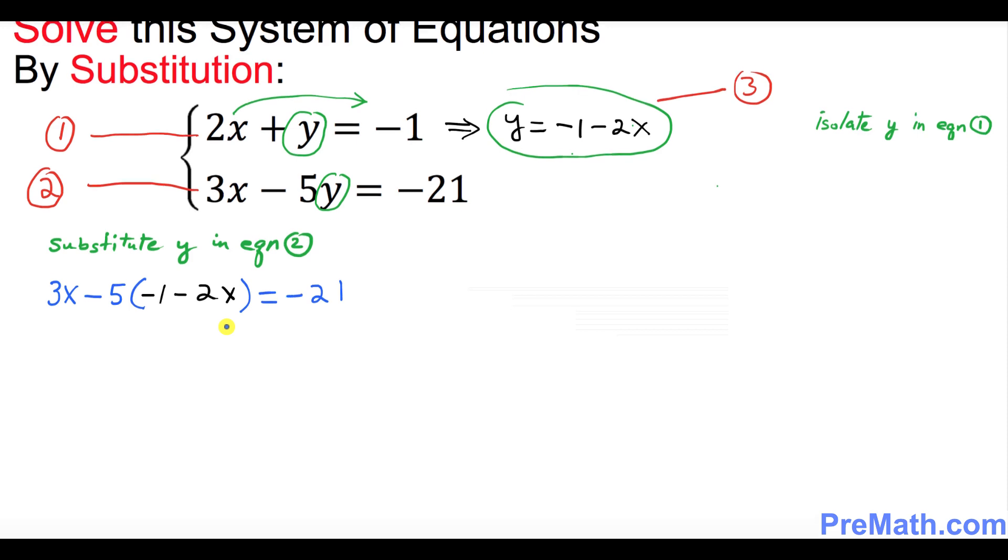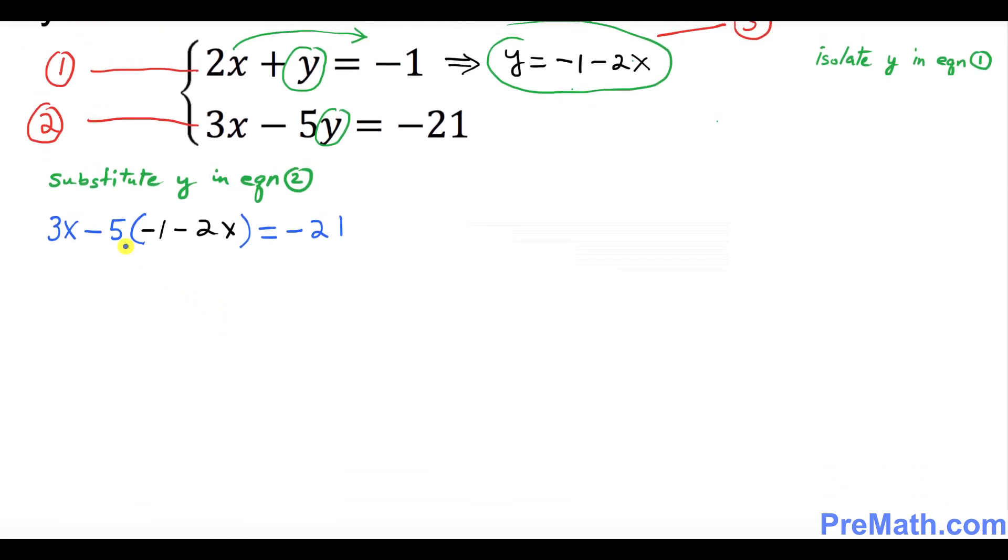Now let's distribute. This is going to be 3x plus 5 plus 10x equals negative 21.